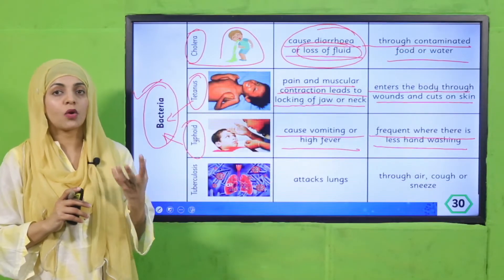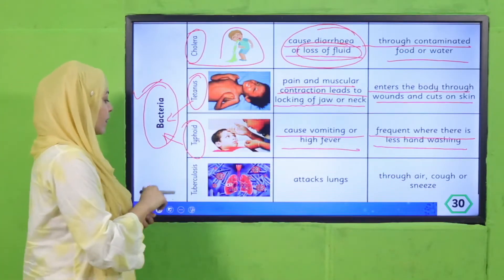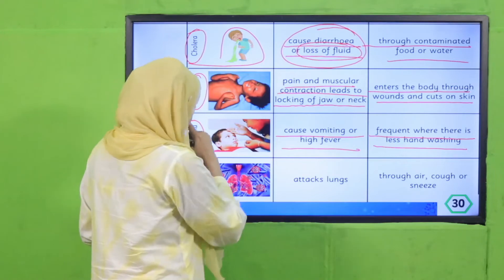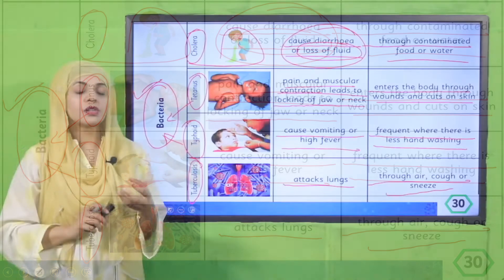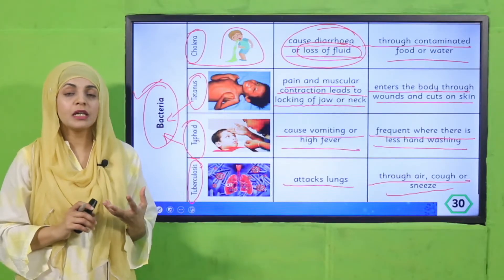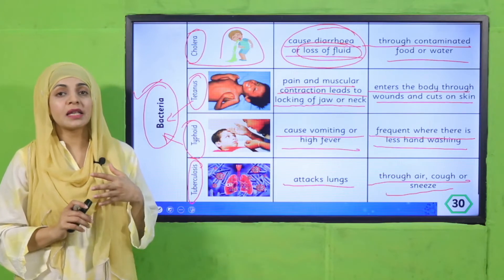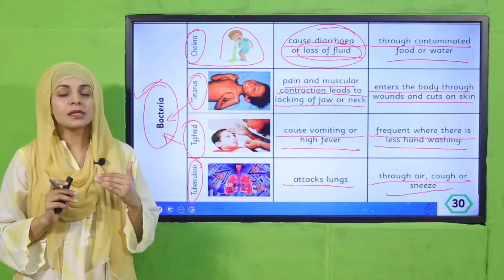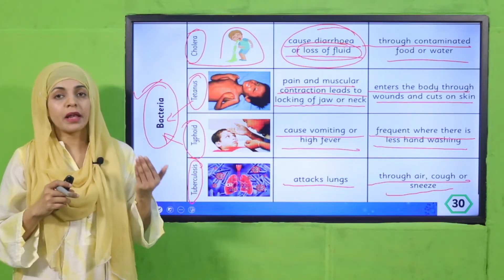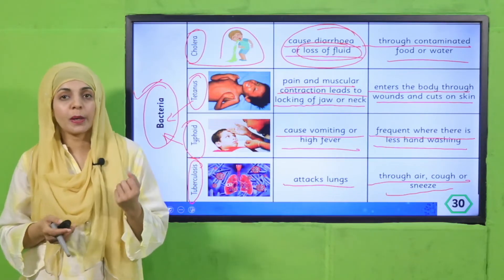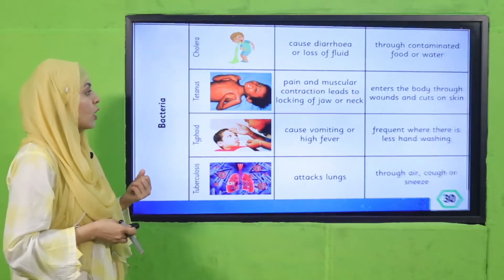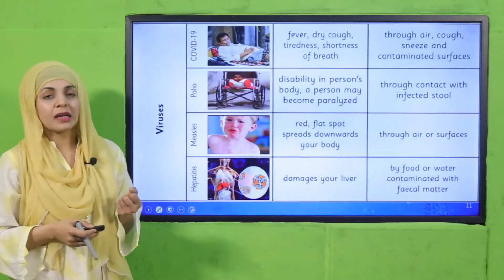Then there is tuberculosis, which attacks the lungs. It is also caused by bacteria and enters through air — through contaminated air, breathing it in allows the bacteria to enter your lungs, and it can cause tuberculosis, which affects your lungs.